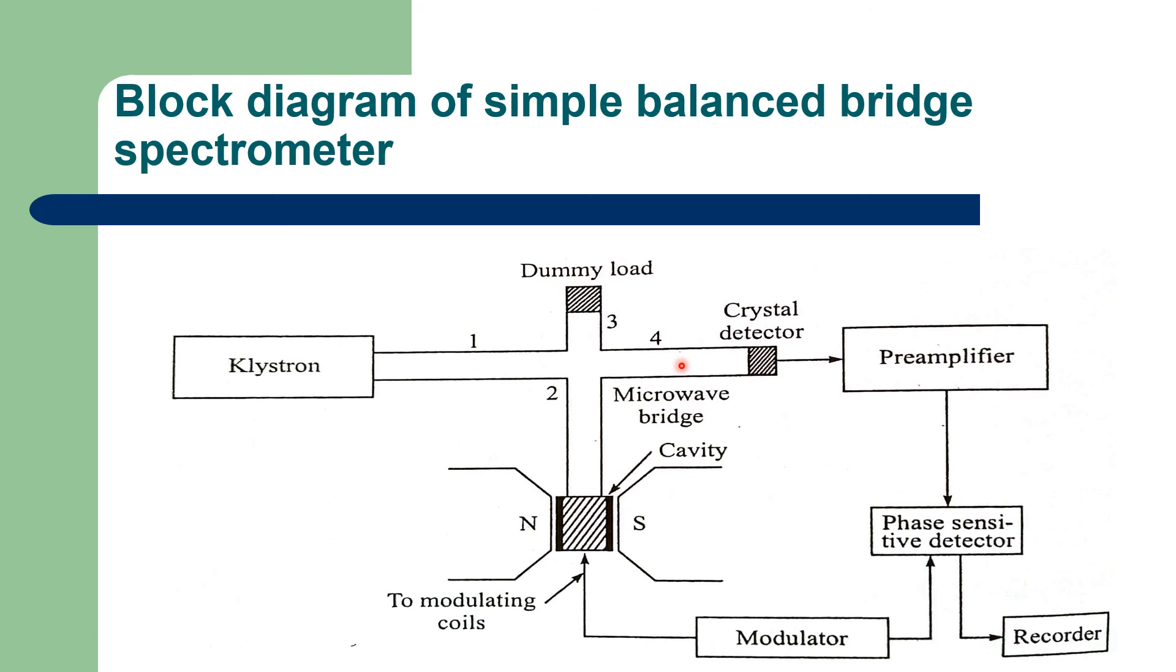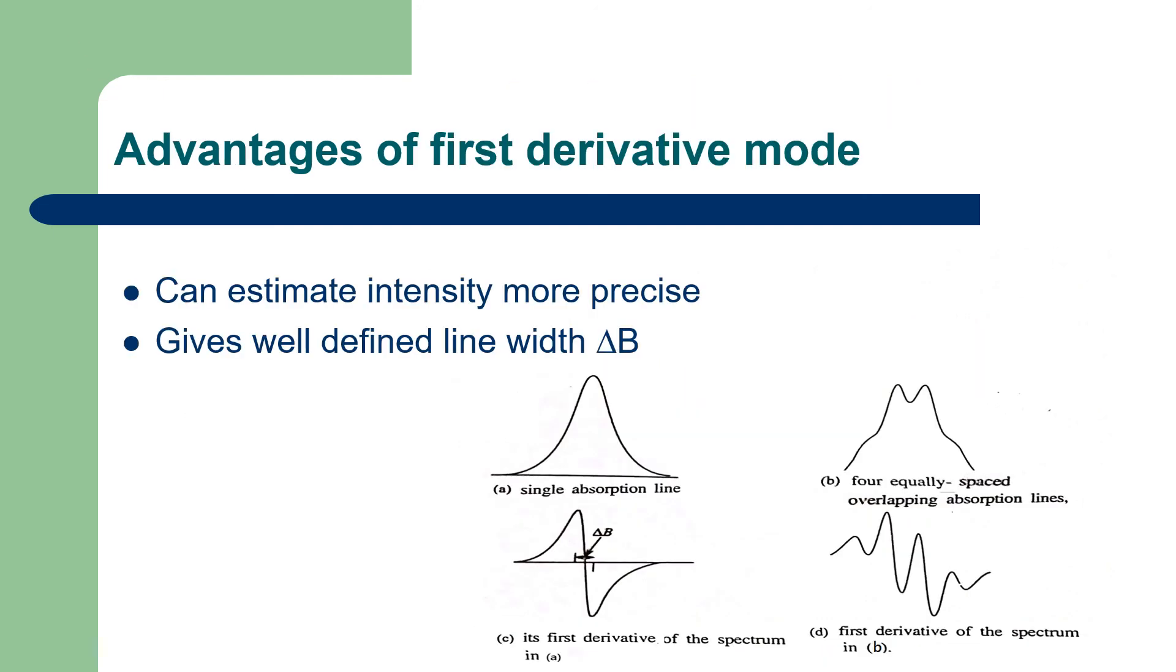The width of the ESR lines are fairly large and hence the spectrum is usually recorded in the first derivative mode. There are two main advantages of first derivative mode. First, it can estimate the intensity more precisely. Second, it gives well defined line width ΔB. Even if there are overlapping of signals, it is still possible to do a good estimate of line width in this first derivative mode.